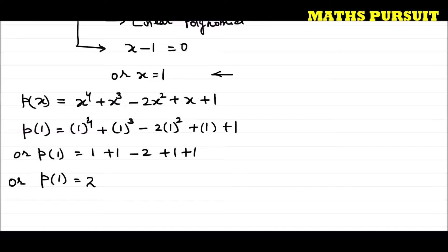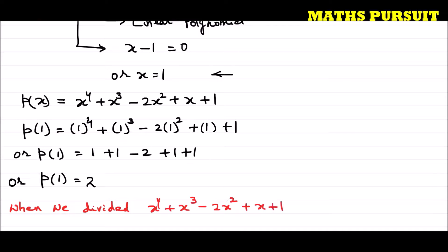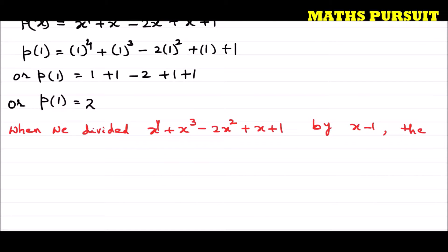So p(1) equals 1 plus 1 is 2, minus 2 is 0, then plus 1 plus 1 equals 2. We got the remainder as 2. So when we divide x to the power 4 plus x to the power 3 minus 2x to the power 2 plus x plus 1 by x minus 1, the remainder is 2.